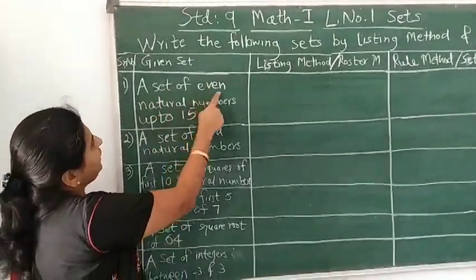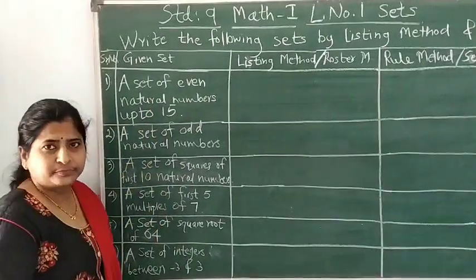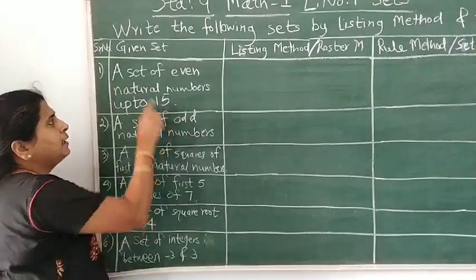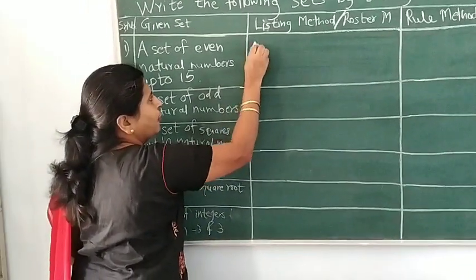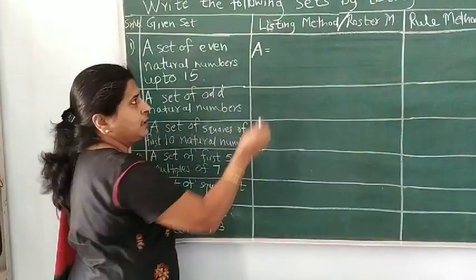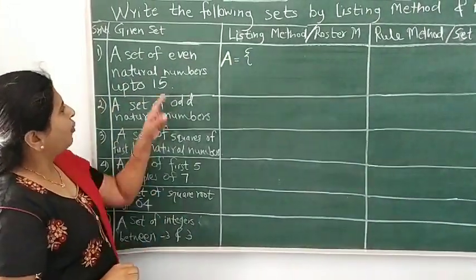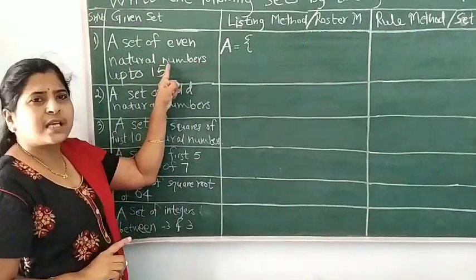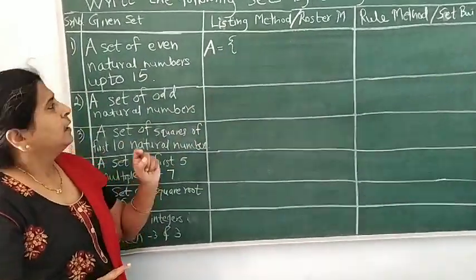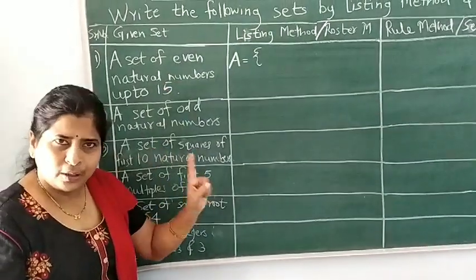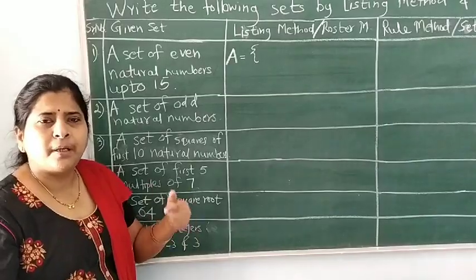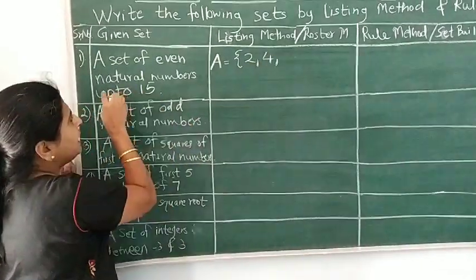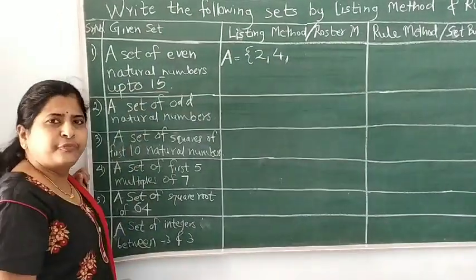The first set is a set of even natural numbers up to 15. Let's write this first by the listing method. No name is given, so we can give any name — say A. A is equal to, then opening curly bracket. We want even natural numbers. Natural numbers start with 1, 2, 3, 4, and so on, but we want even numbers, which are divisible by 2. So we can start with 2. It's 2, 4, and we have the upper limit up to 15.